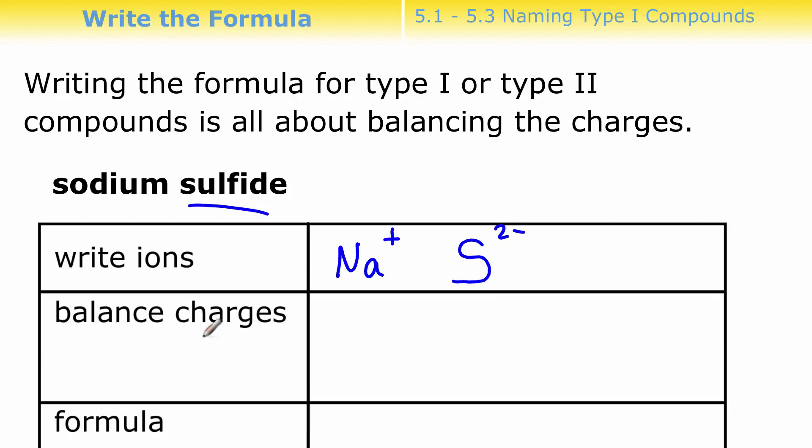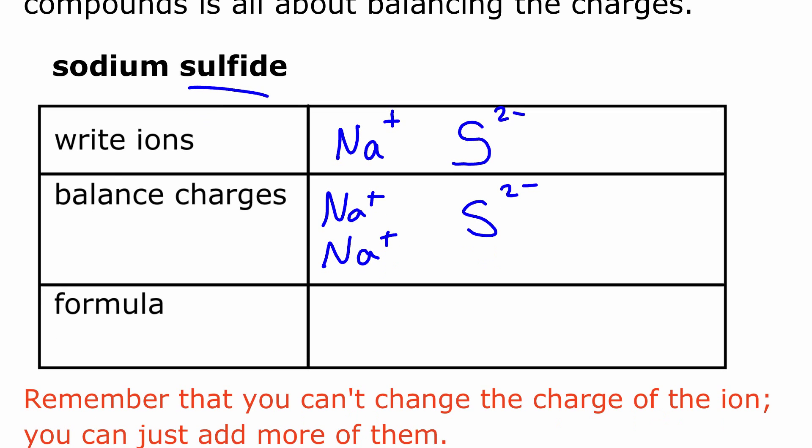Now what I need to do is I need to balance the charges. So here I have a 1 plus, and here I have a 2 minus. They have to be balanced. So hopefully you can see that really what you need is another one of these sodiums. You could have 2 sodiums and 1 S2 minus. So now together these give me a 2 plus, this is a 2 minus, that's balanced. When I write the formula, I just count up how many ions I need. For sodium, I need two of them, and for sulfur, I just need one. Notice that those charges are only used to help me balance, but I don't put the numbers from the charges down here. This two indicates that I needed two sodiums to balance that one sulfur.